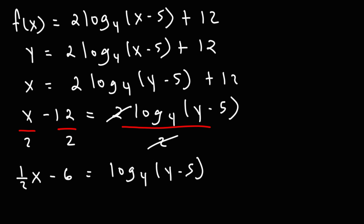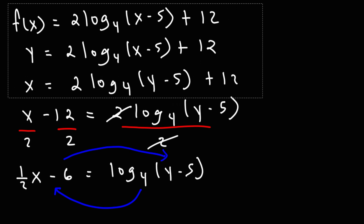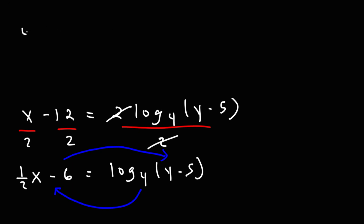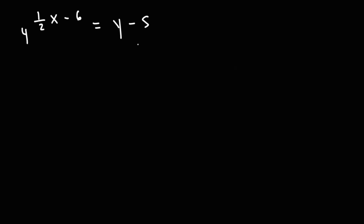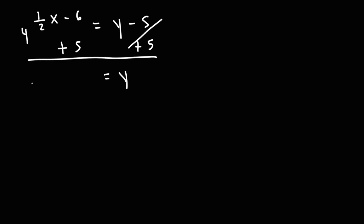Now we need to convert this expression from logarithmic form to exponential form. We're going to start with the base — base 4 — raised to what's on the other side of the equal sign, and that is going to equal what's inside of the log expression. So we're going to have 4 raised to the 1 half x minus 6, and that's going to equal y minus 5. So now I'm going to add 5 to both sides. So we get y is equal to 4 raised to the 1 half x minus 6 plus 5.